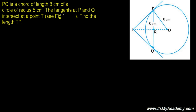The tangents at P and Q intersect at point T. It means from an external point T, we are drawing two tangents TP and TQ. We need to find out what is the length of this tangent. Either you find out TP or TQ — both are equal.